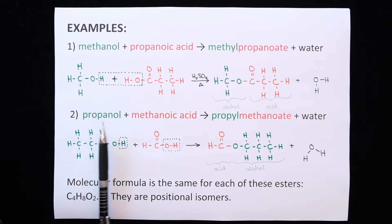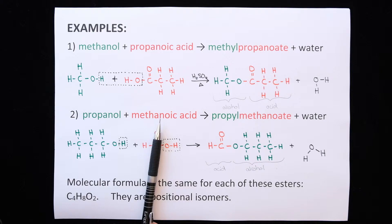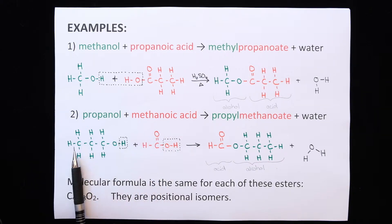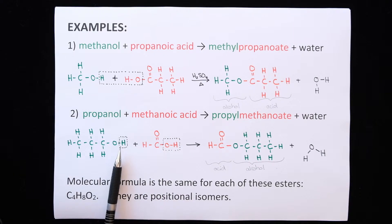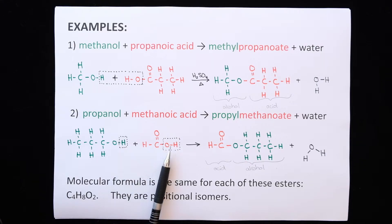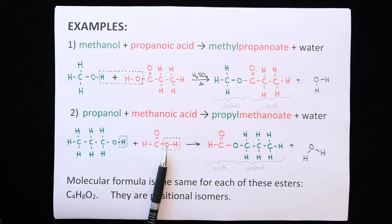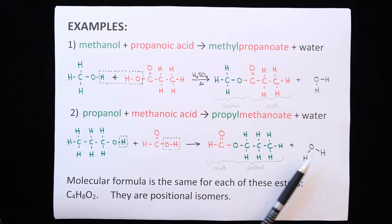The second example, the alcohol is propanol and the carboxylic acid is methanoic acid. Propanol, three carbons in the hydroxyl group. The H from the hydroxyl bonds with the OH from the carboxylic acid to form your water. I've written the carboxylic acid part first, just so that you can get used to writing it different ways. And then I've flipped the rest of this molecule and attached it to the carboxylic acid part.